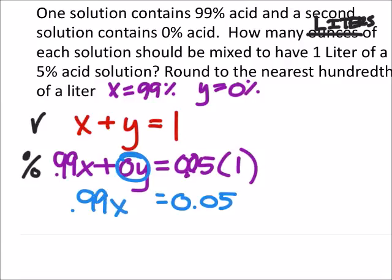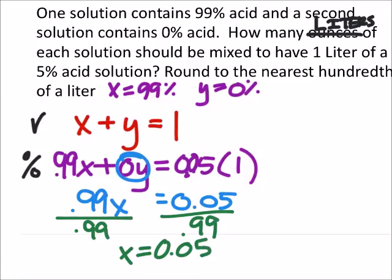I've got 0.99X needs to equal 0.05. This did tell us to round to the nearest hundredth, so when we divide by 0.99, this works out to 0.05 liters of the 99% solution.